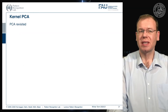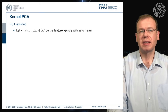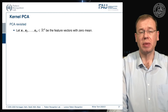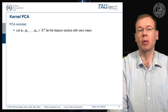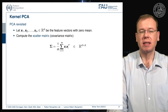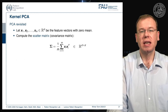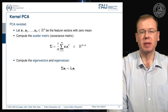Let's revisit the PCA. We had some observations x1 to xm in a d-dimensional feature space and they had a zero mean. If they don't have a zero mean then we could enforce them to have zero mean by normalization. We can then compute the scatter matrix or covariance matrix given as essentially the outer products of the respective feature vectors — this is a d times d matrix. We could then compute the eigenvectors and eigenvalues of this from the eigenvector problem.